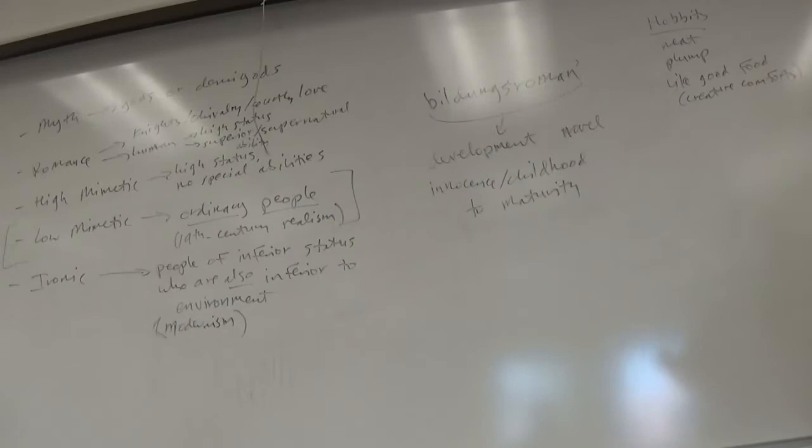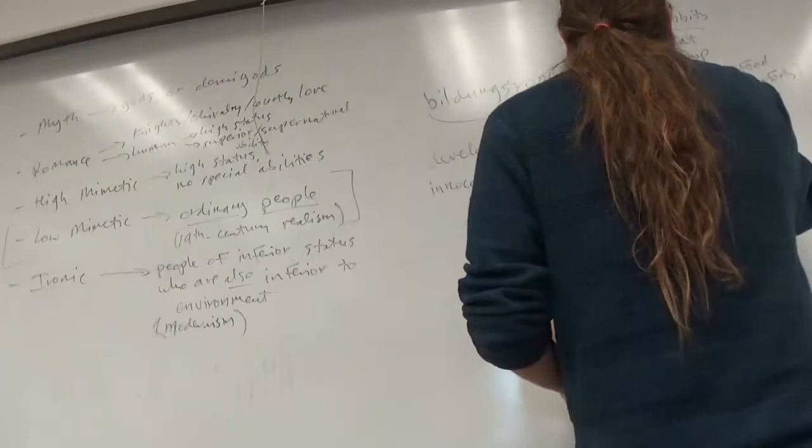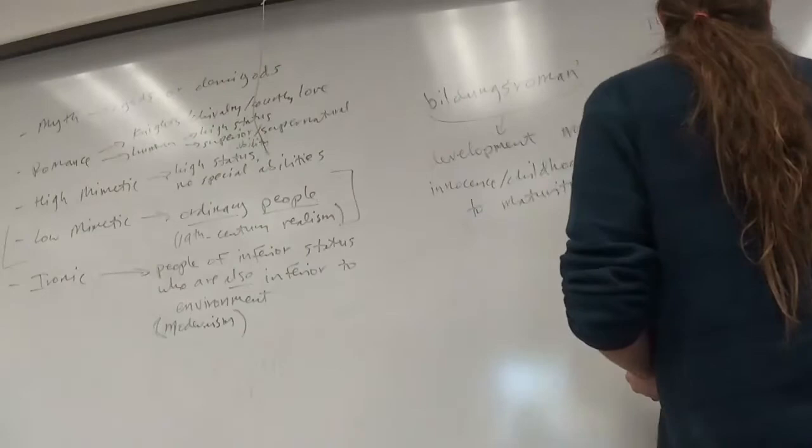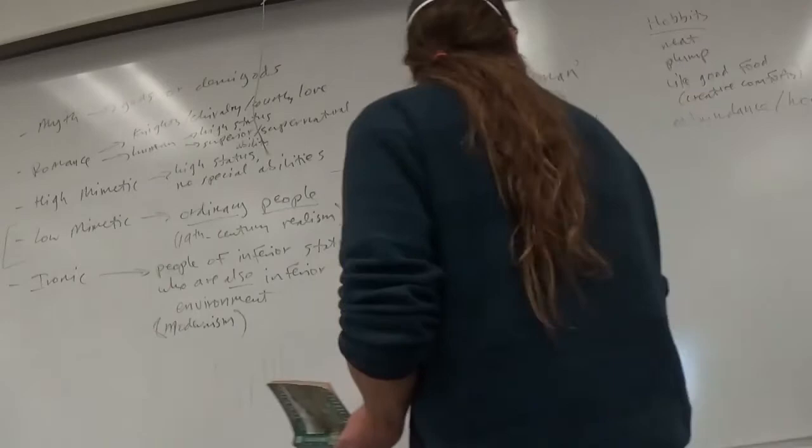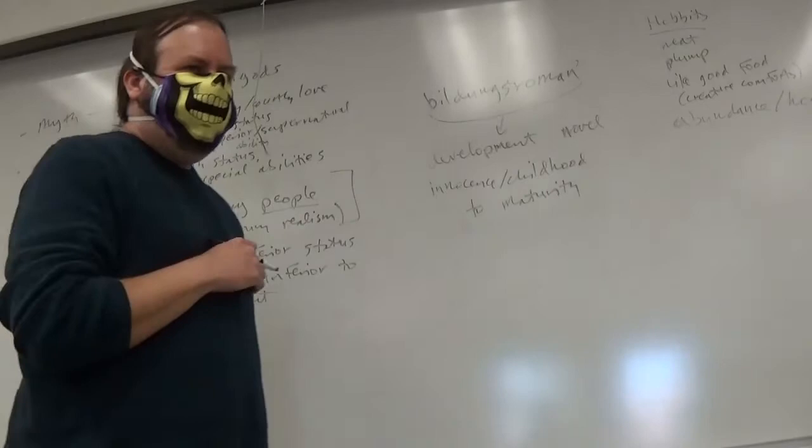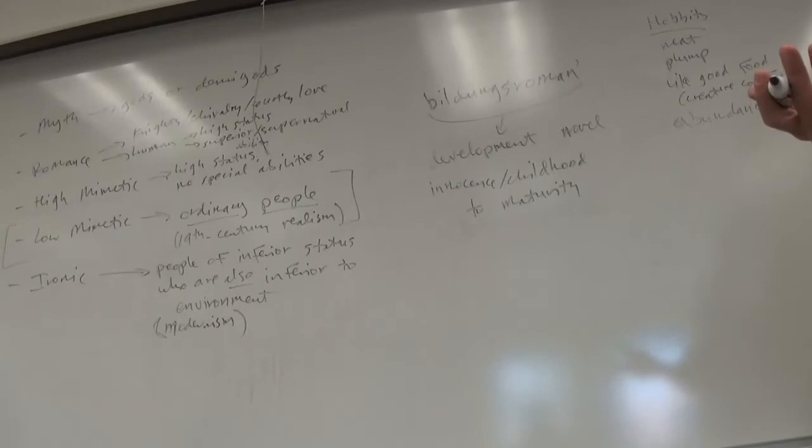The tunnel wound on and on, going fairly but not quite straight into the side of the hill. And many little round doors opened out of it. No going upstairs for the Hobbit. Bedrooms, bathrooms, cellars, pantries, lots of these. Wardrobes, he had whole rooms devoted to clothes. Kitchens, dining rooms, all were on the same floor. The best rooms were all on the left-hand side going in, for these were the only ones to have windows. There are a couple of things we can pull out of this. Apart from the womb-like structure here, we get a sense of abundance. This Hobbit has lots of room, and lots of stuff. Almost like a hoarder. If it's just you, why do you need whole rooms dedicated to clothes? Why do you need multiple pantries and cellars?